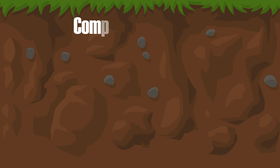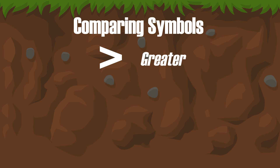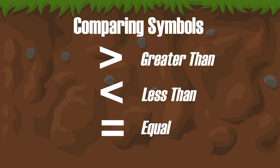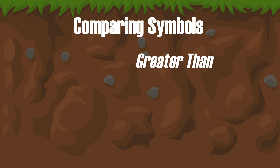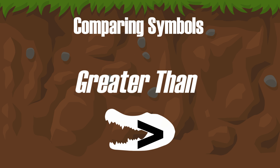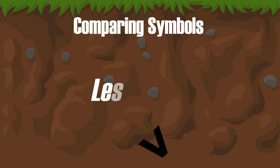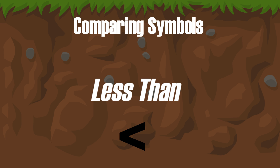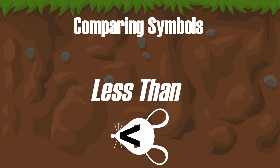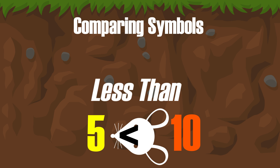Let's talk about the symbols I can use — greater than, or less than, or equal to. Greater than looks like a gator's mouth; he eats those bigger numbers. Now let's flip the symbol around. Less than looks like a little mouse; he eats those small things around the house, just like those smaller numbers.